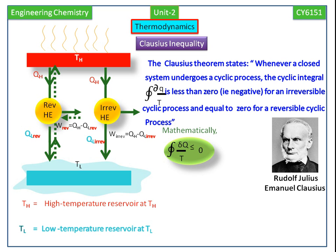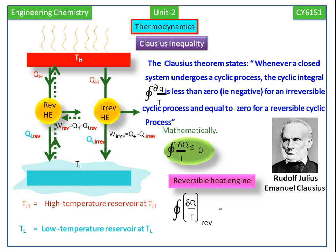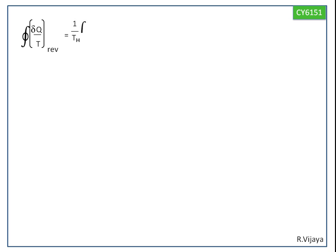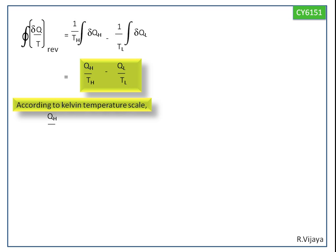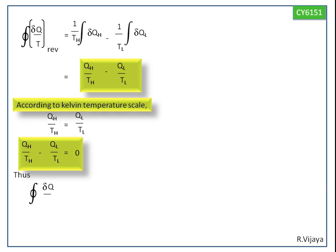Now we calculate the cyclic integral of delta Q by T for the reversible heat engine. Its value becomes integral of delta QH by TH minus integral of delta QL divided by TL. By simplifying this equation and integrating, we get QH divided by TH minus QL divided by TL. According to the Kelvin temperature scale, QH divided by TH is equal to QL divided by TL. So QH by TH minus QL divided by TL is equal to zero. Substituting this value, we get cyclic integral of delta Q by T is equal to 0 for the reversible heat engine.